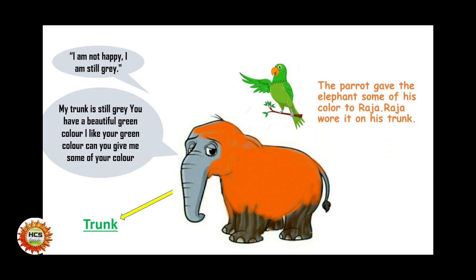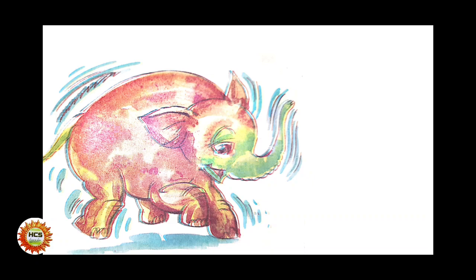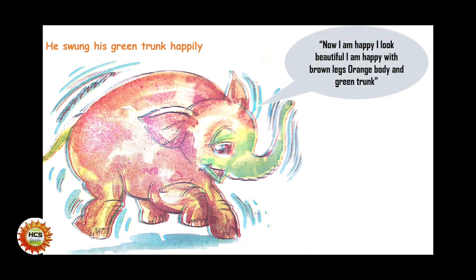The parrot gave the elephant some of his green color. Raja wore it on his trunk and swung his green trunk happily. Now he said, I am happy! Look how beautiful I am. I am happy with brown legs, orange body, and green trunk.